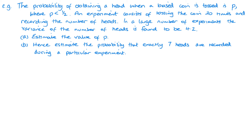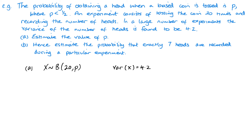Here we have a worded question. The probability of obtaining a head when a biased coin is tossed is p, where p is less than a half. An experiment consists of tossing the coin 20 times, so n = 20 and p is unknown but less than a half. We're recording the number of heads. In a large number of experiments the variance is found to be 4.2, so Var(X) = np(1 minus p) = 4.2.